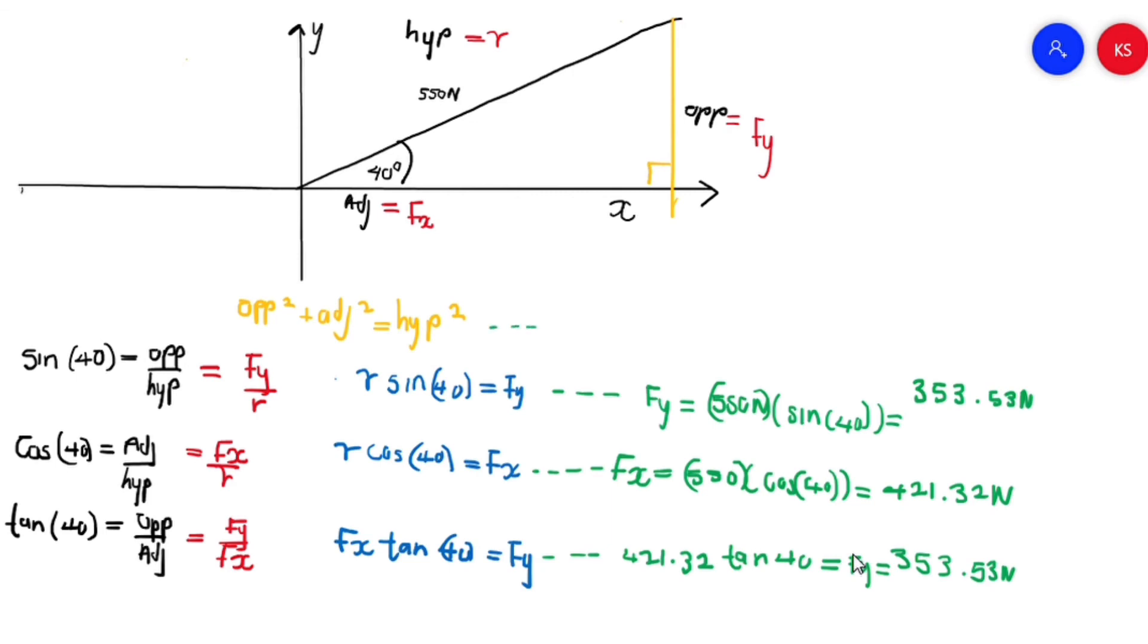The hypotenuse is basically going to be the square root of opposite squared plus adjacent squared. This should give you 550 newtons.